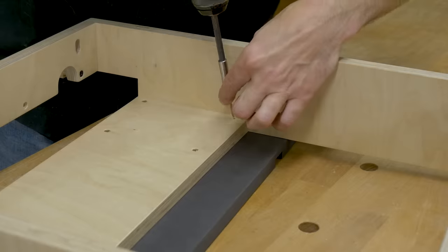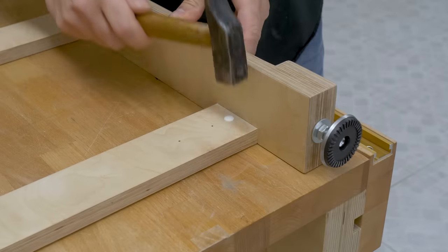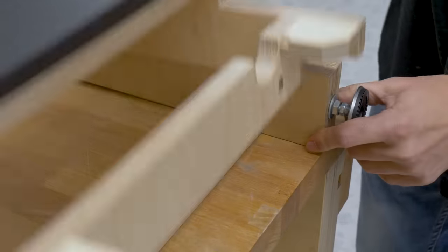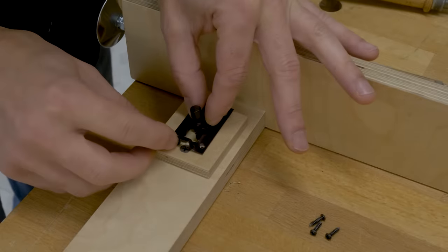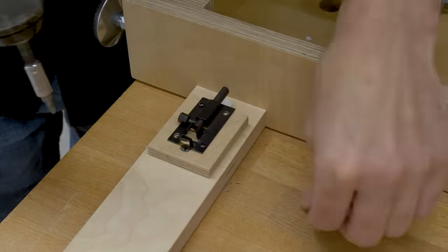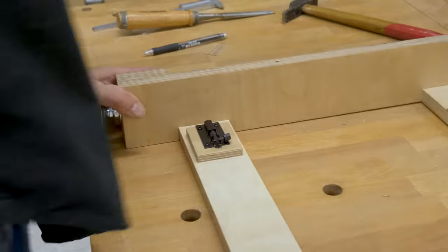All that's left to do now is to attach the barrel latches to keep the table folded when necessary. First I'll place two rubber bumpers. Now I'm going to install two spacers made of plywood so that I can screw the latches to them. I'll use the latch itself to mark the required hole on the other piece.